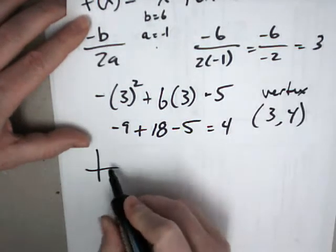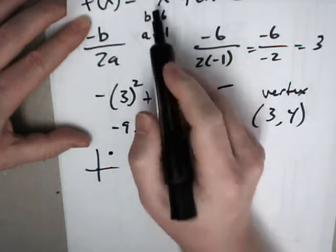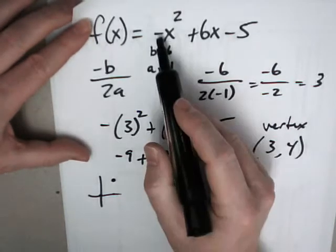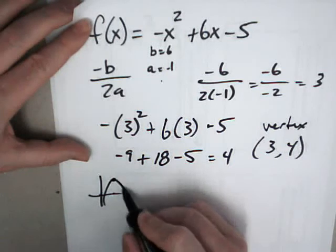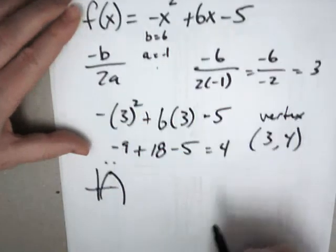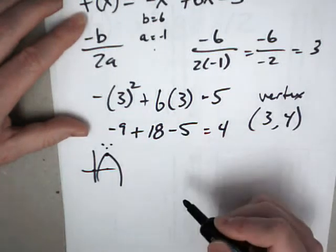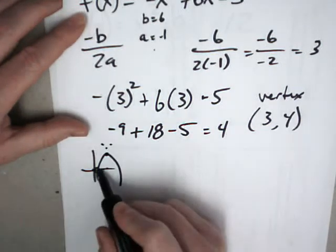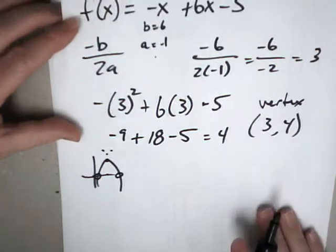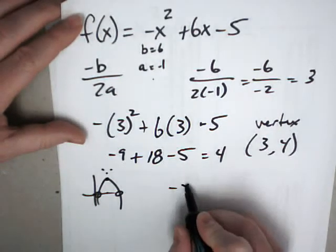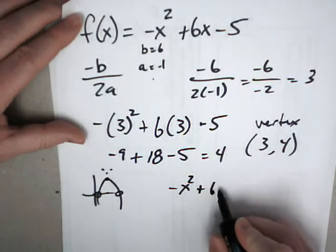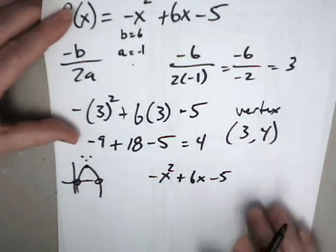So when I graph it over 3, up 4. See that negative, see that negative there on the x? That makes it a frowny face. Oh, frowny face. So 2 intercepts. 2 intercepts I'm looking for. So I'll set this equal to 0. That's how I find that x-intercepts.